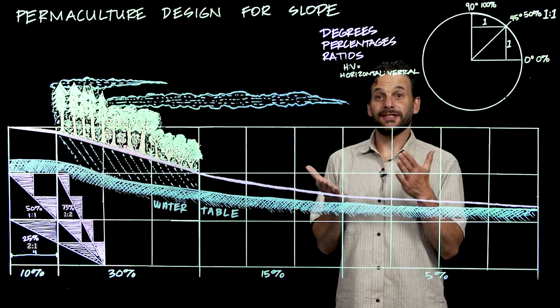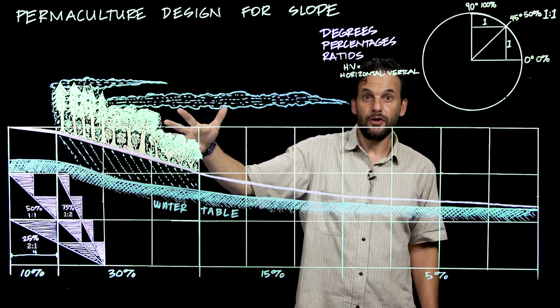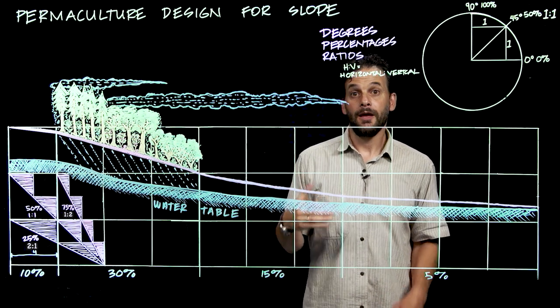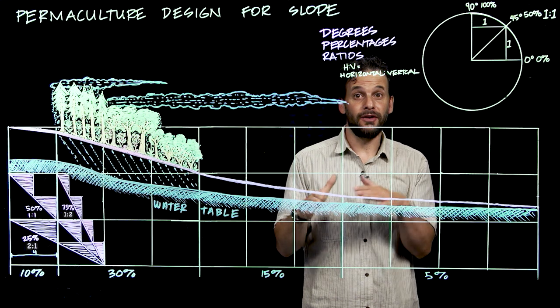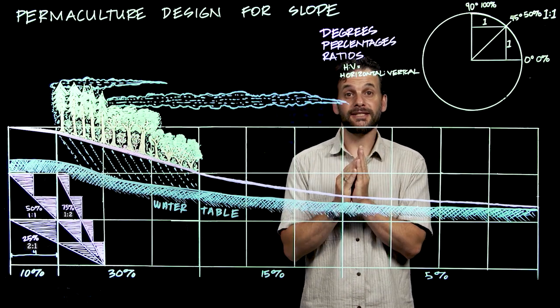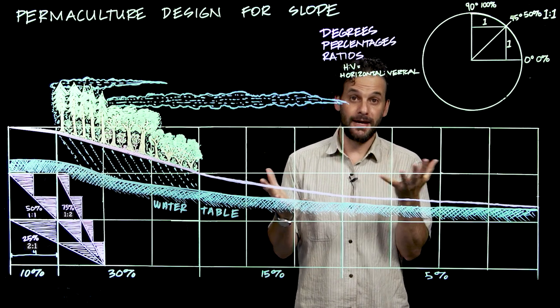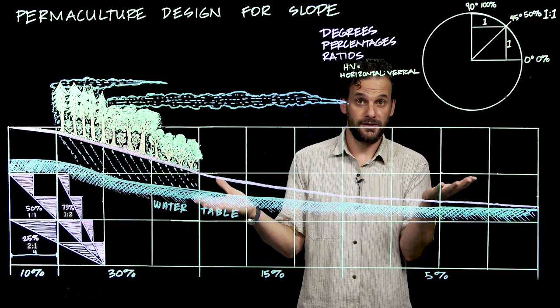The forested slope also has the effect of breaking up the cold air that flows down the hill at night. But cold air does flow down, and at the very bottom of the slope, at the bottom of the valley, there will be a frost line where the frost will settle in winter in a temperate climate where you have freezes.